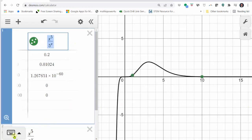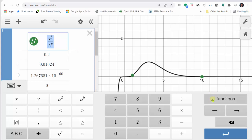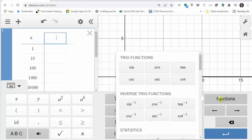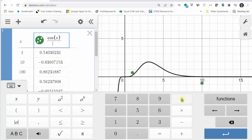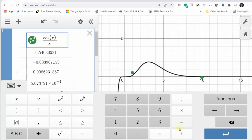We are going to clear the existing function and enter cosine. We can find cosine by clicking on functions, and then here's cosine x close parenthesis divided by x right arrow plus one.